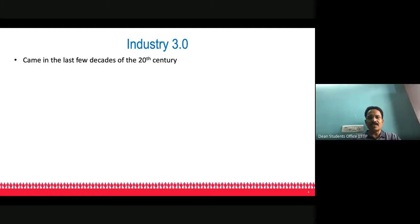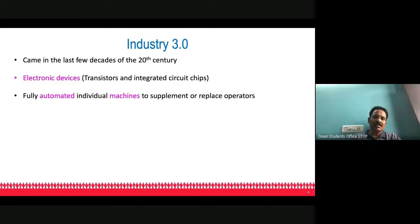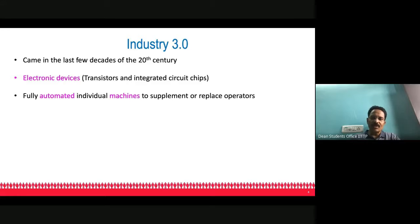Industry 3.0 came into picture in the last few decades of the 20th century — the 70s, 80s, and 90s. Electronic devices such as transistors and integrated circuits came into existence. Once these electronic devices were available, machines were made to operate automatically, either to minimize human operator effort or to completely eliminate the human operator. One such example is the CNC machine.